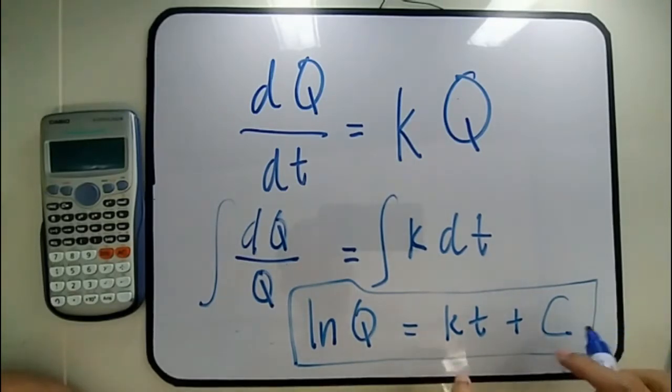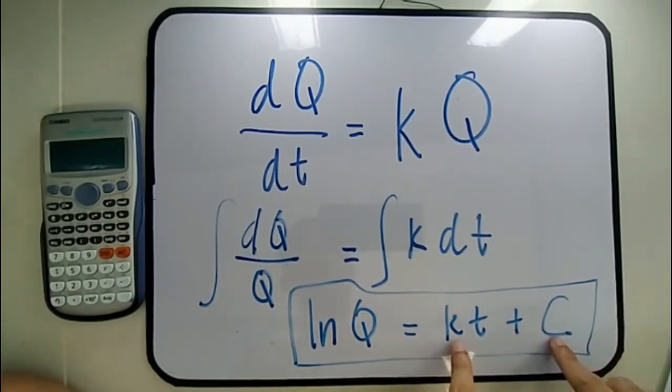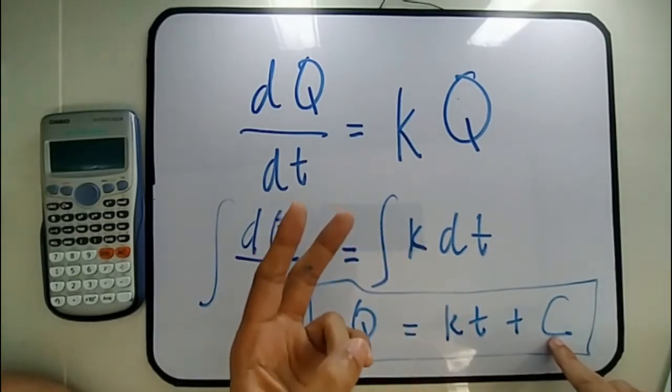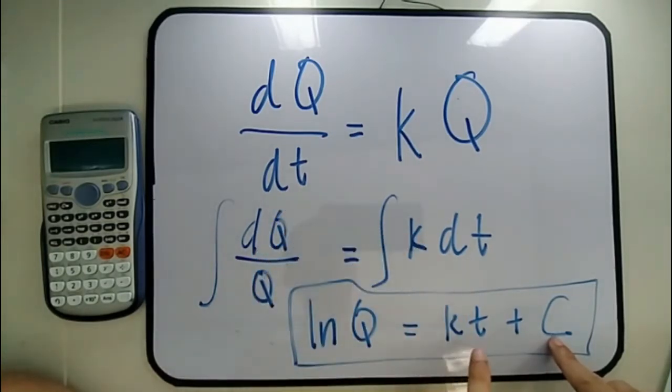As you can see, we have two constants. Therefore, we need two boundary conditions in order to solve for these two constants.